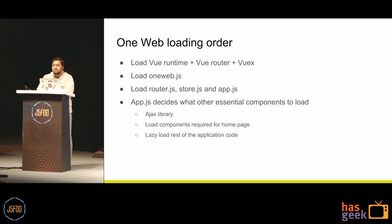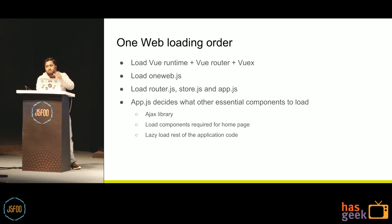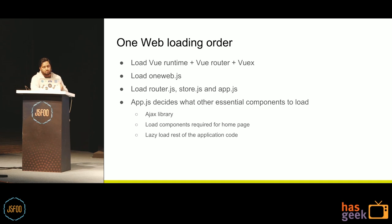Our developers have to make a conscious call about how to load assets for page performance. First, load Vue Runtime — which handles all the framework-related tasks of Vue. Vue Router is a client-side routing library and VueX is a state management pattern. Once that is loaded, next I load OneWeb.js — Ola-specific code and modifications. Then load Router, Store, and App.js. Once App.js is downloaded, we decide which components load next. We usually load our Ajax library and the components required for the homepage to be functional, then lazy load the rest of the application code.